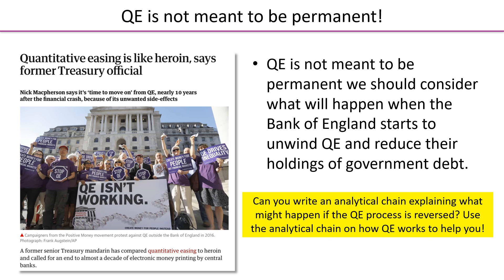We would like you to write an analytical chain explaining what might happen if the QE process is reversed. Have a look back at the transmission mechanism and use that to see if you can work out what happens when we unwind QE.